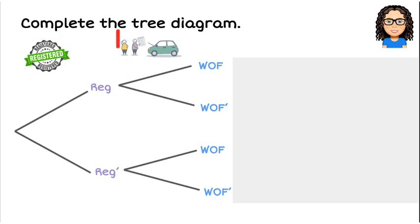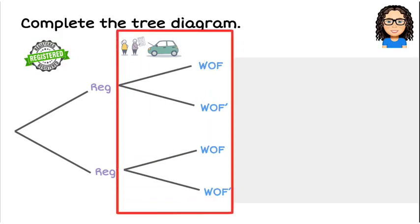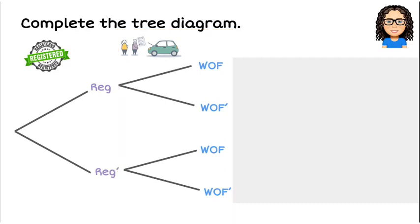The second layer of the tree is about whether or not the car has a warrant of fitness. Those are our two layers, and now we want to put that information onto the diagram.